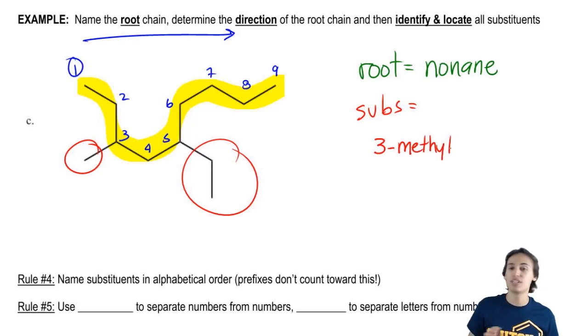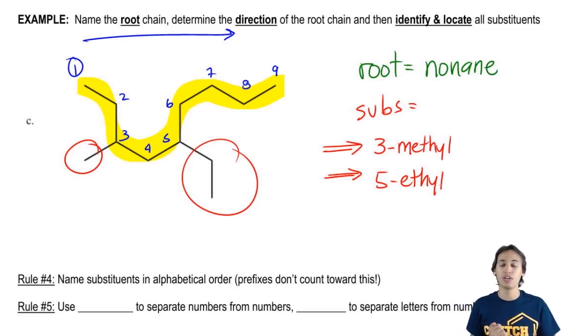By the way, if you didn't add the hyphen, that's totally fine because I haven't taught you that yet. But just so you know, if you just put three methyl, that's fine, but it's actually three-methyl. That would be one substituent. Another substituent would be five-ethyl. Does that make sense? Because I have an ethyl group on the five and a methyl group on the three.